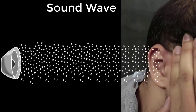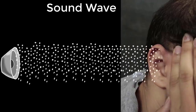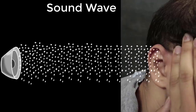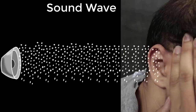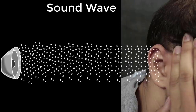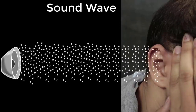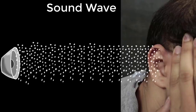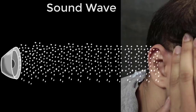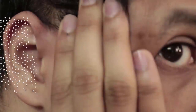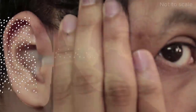But how does something as boring as air molecules going back and forth make us experience something like this? Well, for that we need to look at our ear carefully — the entire structure of the ear.